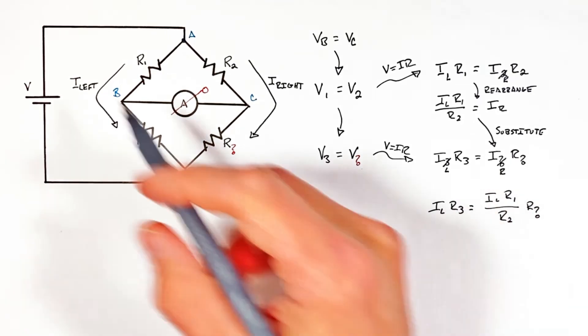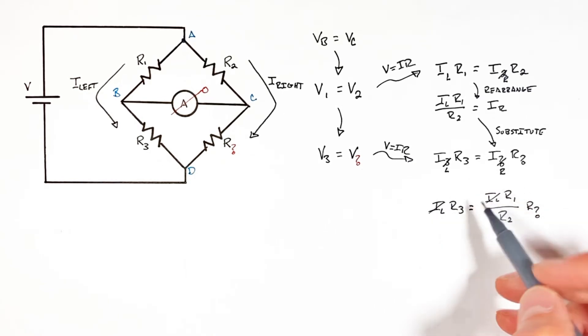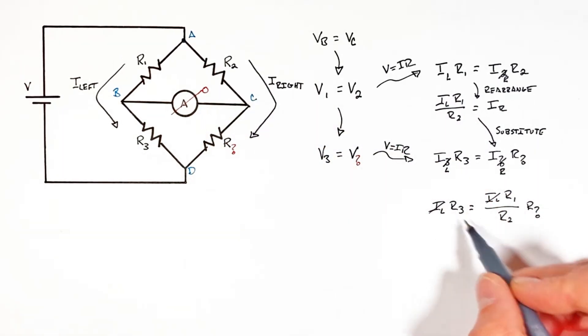And you'll notice now the current on the left side cancels out. Ultimately we've gotten rid of all of our currents and now we simply have an expression relating our four values of resistance to one another. Now there's several different ways we can rearrange this equation.